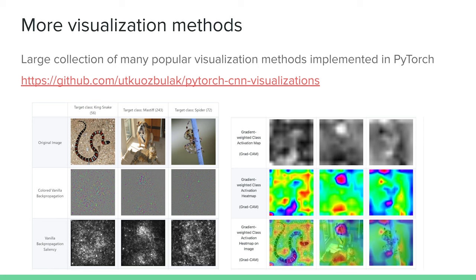Apart from the vanilla backpropagation algorithm, there are several other methods to produce similar visualizations. There is a resource where many of these algorithms have been implemented in PyTorch and can easily be used for your models — you can put in your trained model and some examples, and it will create several different visualizations for you. Go check it out; it's a fantastic repository and a great resource.